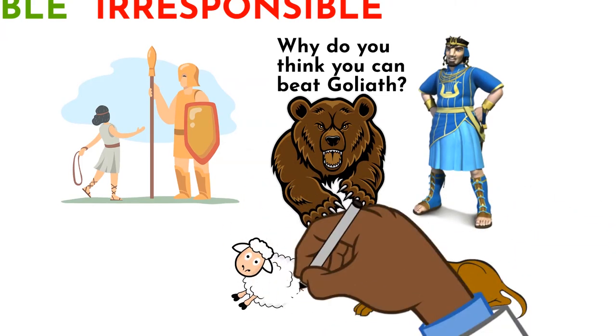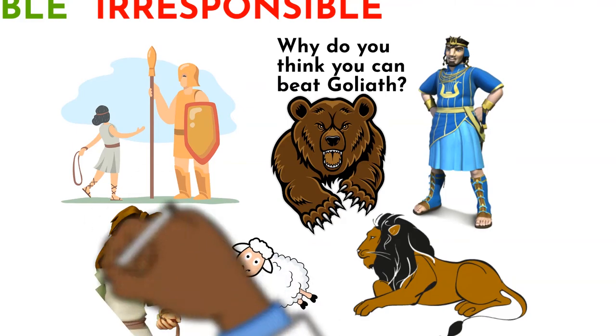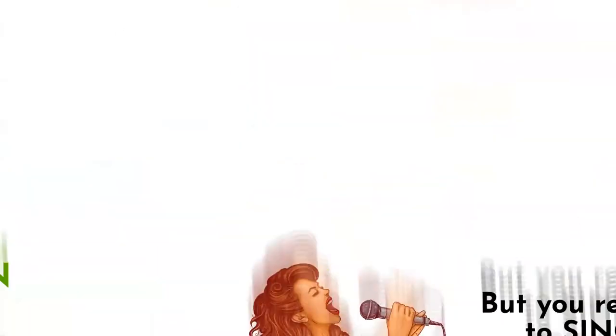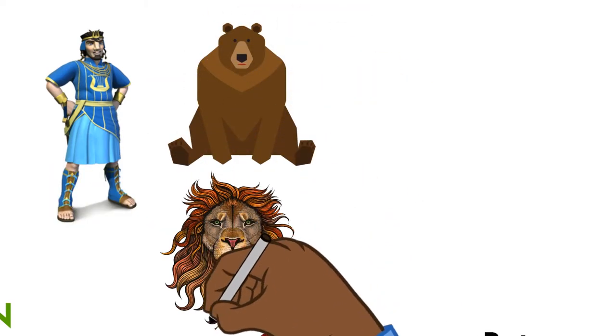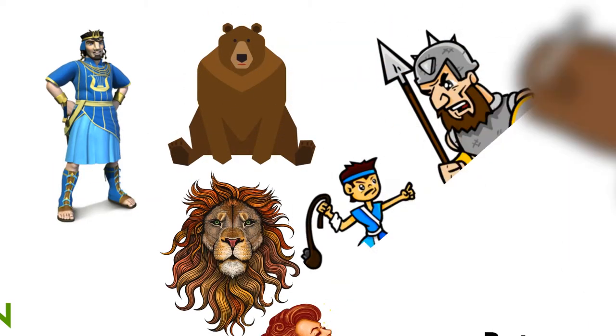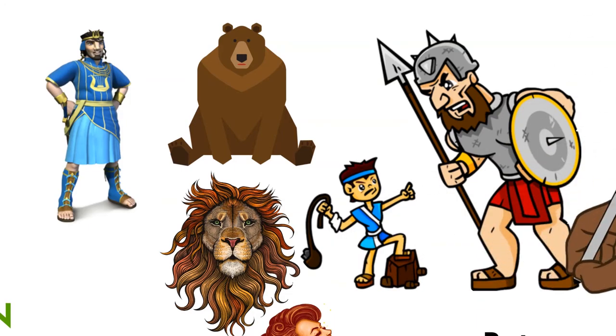David replied, 'I killed a bear who came for my sheep. Even the lion - the sheep was in his mouth. I went and removed it from his mouth, and when he came against me, I killed it. I have killed bear and lion before, and so I can kill Goliath.' What have you done with what you can do?